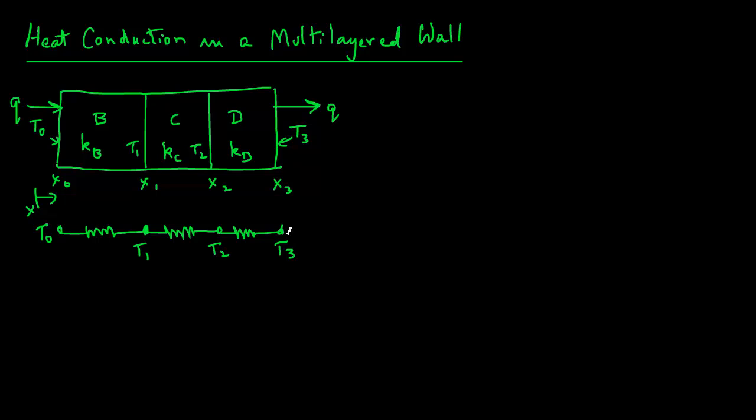And the thermal resistance values are R, let's call it R for B, and R C, and R D. Those are the thermal resistances for layers B, C, and D.